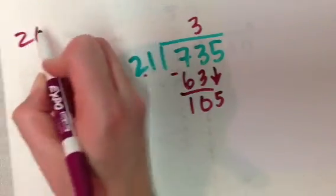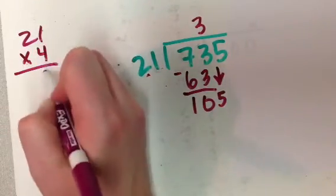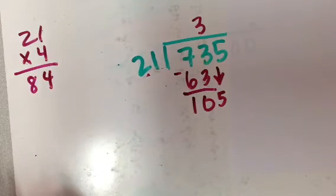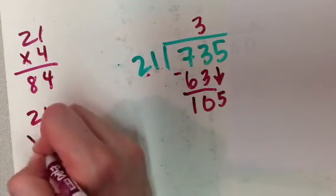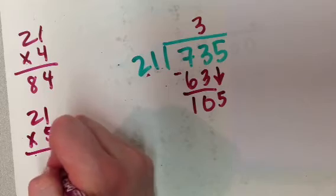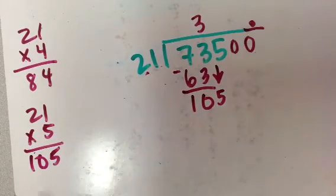Well, 21 times 4, I just erased it to give myself some more room, but that got me kind of close, right? That got me all the way up to 84. I wonder what 21 times 5 is? Oh, would you look at that? It's 105 exactly.